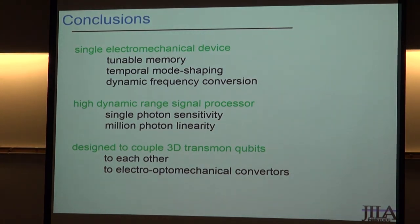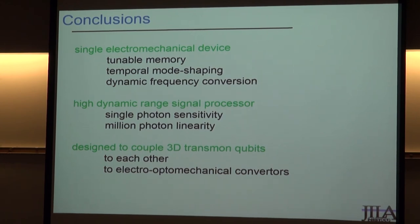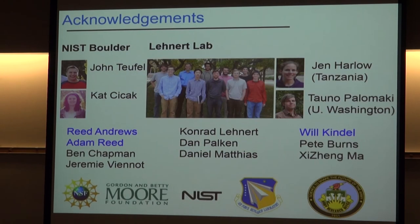In summary, these electromechanical structures enable coupling of 3D transmon qubits — you can move information from one node to another in a deterministic way. What I've shown is that in a single electromechanical device there's a tunable memory, temporal mode shaping, and dynamic frequency conversion. It works with single-photon sensitivity but million-photon linearity. In that sense, it's really designed to couple 3D transmon qubits to each other or to our electro-optic converters for moving information from the microwave to optical domain.